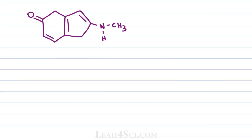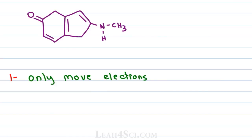Before we look at patterns to recognize, let's look at what you should never do when working on resonance. Rule number one: only ever move electrons. I know this sounds self-explanatory, but I can't tell you how many times I see students trying to put arrows on positive charges or even hydrogen atoms. Only ever move electrons — and more specifically, these electrons should be lone pairs or pi electrons.